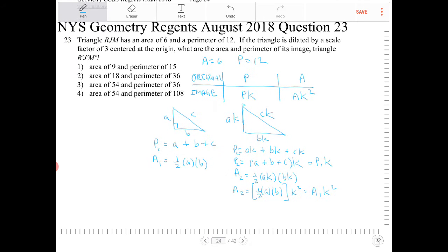Going back to this problem, the area is 6 and the perimeter is 12. The image is going to have an area of 6 times 3 squared and a perimeter of 12 times 3. So what is that? That's going to be 54 and 36. So that would be option 3.